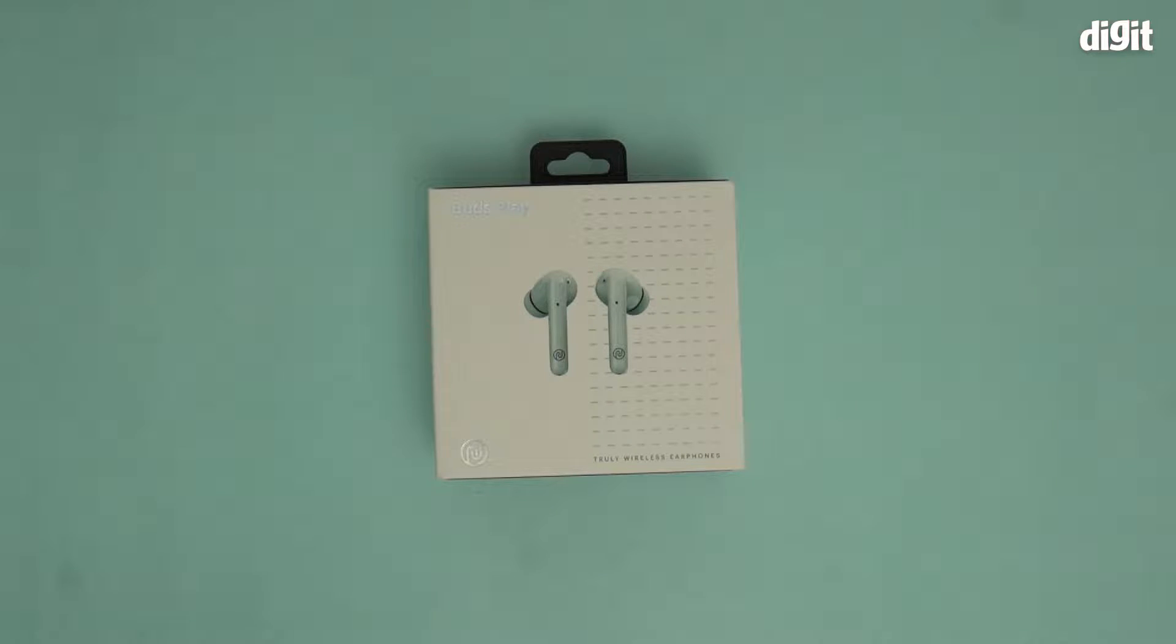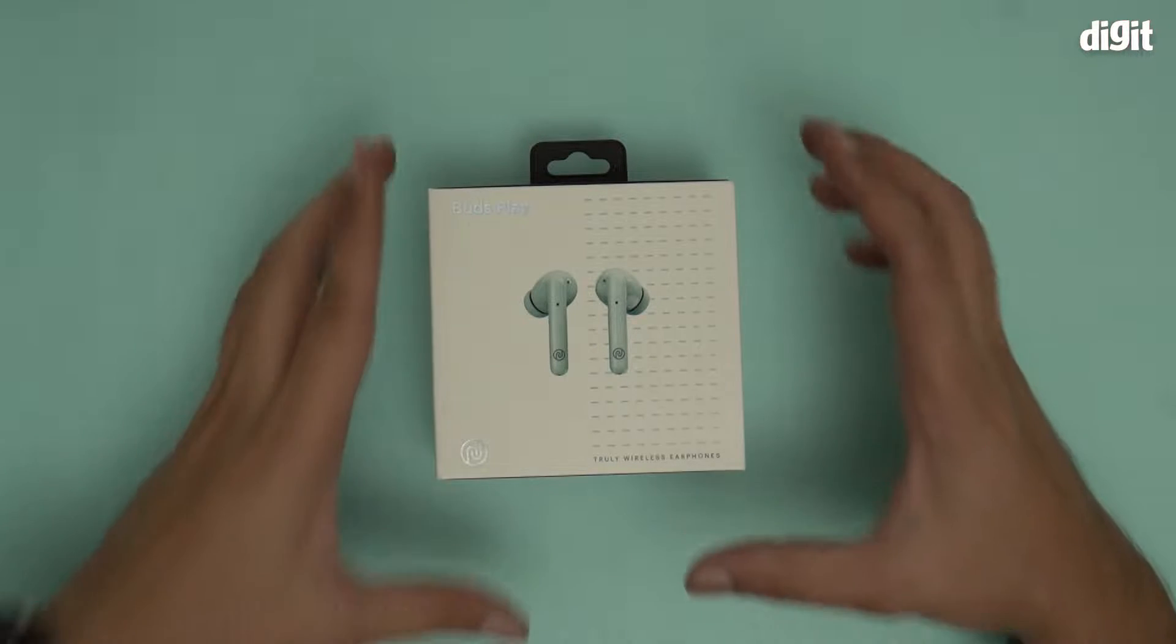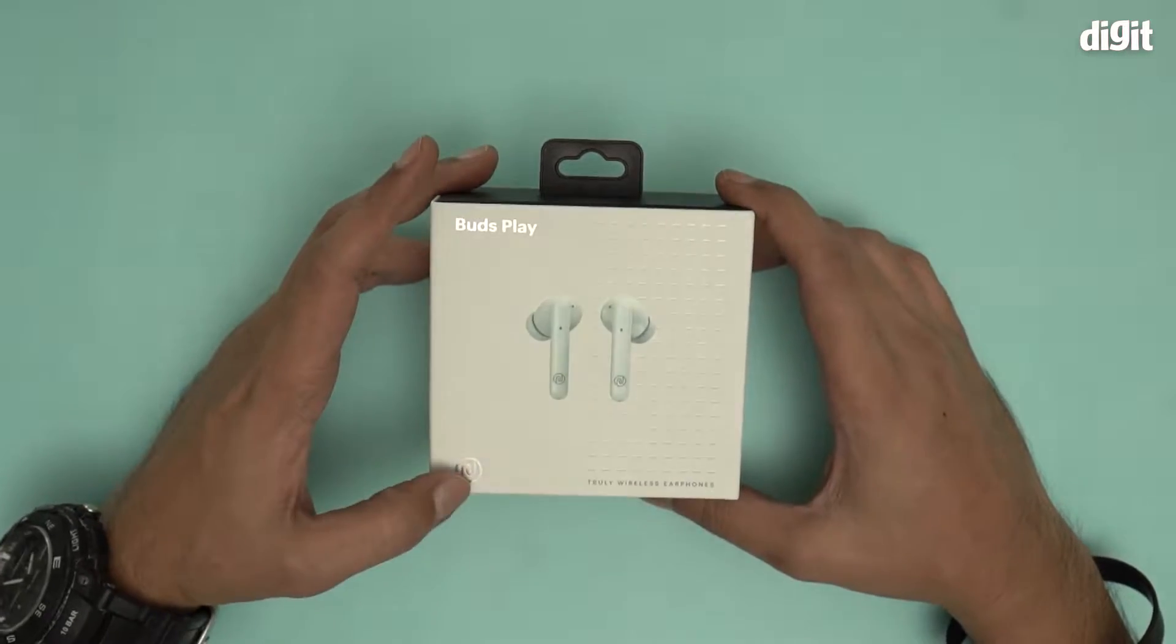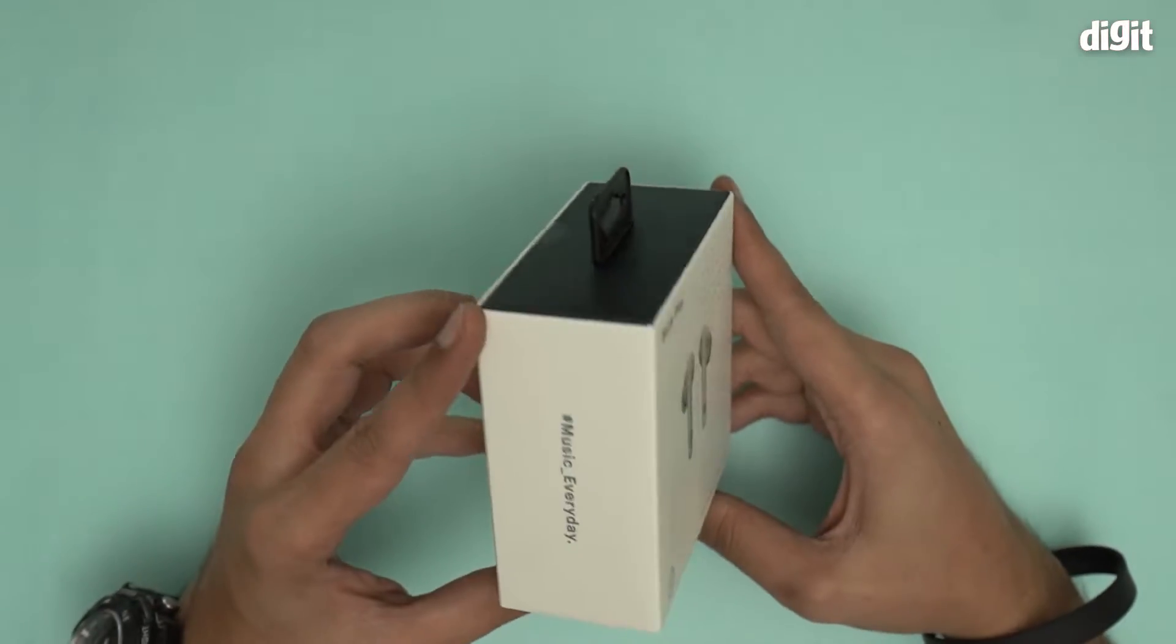Hello and welcome to the unboxing of the Noise Buds Play Version 2 true wireless earphones. You can see what they look like. These are half in-ear design earphones. You can see the Noise logo over here and also quite evidently on the back side.